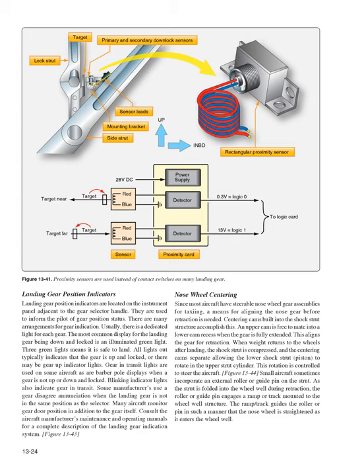Nose-wheel centering: since most aircraft have steerable nose-wheel gear assemblies for taxiing, a means for aligning the nose gear before retraction is needed. Centering cams built into the shock strut structure accomplish this. An upper cam is free to mate into a lower cam recess when the gear is fully extended, aligning the gear for retraction. When weight returns to the wheels after landing, the shock strut is compressed and the centering cams separate, allowing the lower shock strut piston to rotate in the upper strut cylinder for steering. Small aircraft sometimes incorporate an external roller or guide pin on the strut that engages a ramp or track mounted in the wheel well structure to straighten the nose wheel as it enters the wheel well.